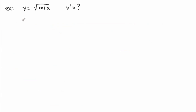If we wanted the slope at, say, x equals 2, we'd just replace x with 2 and compute. That's how we deal with chain rule for that example. Now let's do one more.